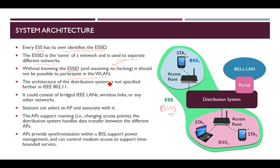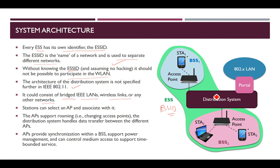The internal architecture of the distribution system is not further specified in the 802.11 standard — what is inside was not defined by this standard. However, it is known to consist of bridged IEEE LANs, wireless LAN links, or other networks. Generally it contains bridges and wireless links to make communication possible.